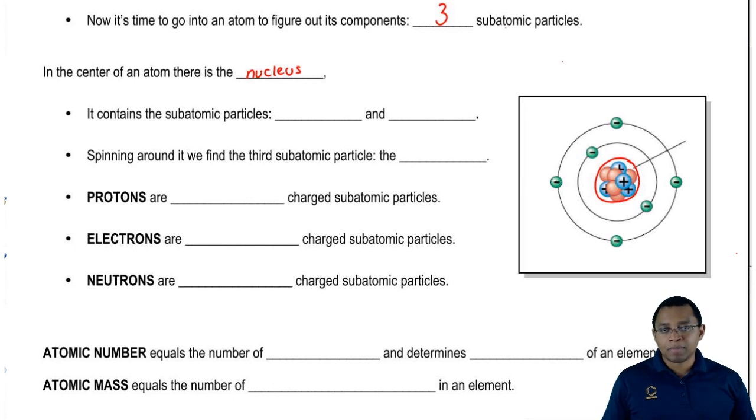Inside the nucleus, we have two out of the three subatomic particles. We have our protons and our neutrons.